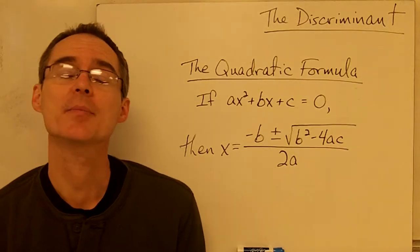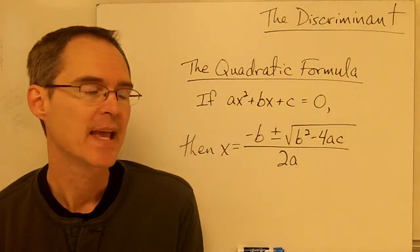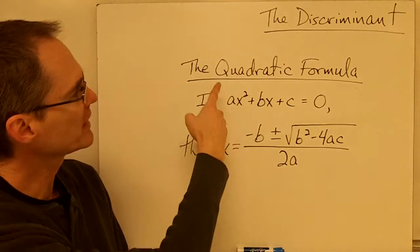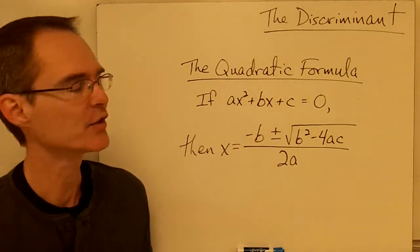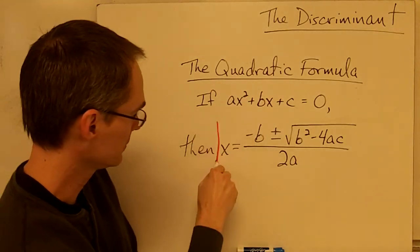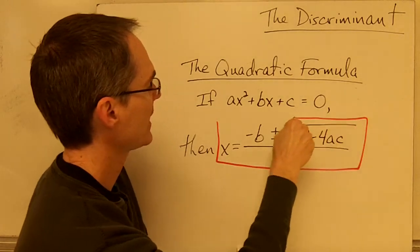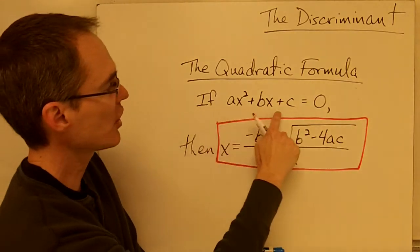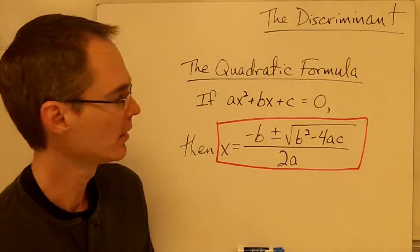In this video we're going to talk about something called the discriminant. In order to talk about the discriminant, we need to talk about the quadratic formula, which is a formula you can use to solve a quadratic equation for x.